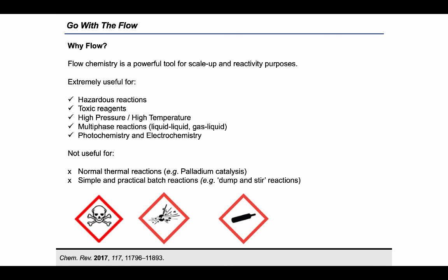It is also clear at this point that there are reactions that do not benefit from flow systems. For example, simple homogeneous chemical transformations that require just high temperature usually do not show any improvement when conducted in flow. There is no reason why a simple dump-and-stir batch protocol should be translated into a flow setting if it cannot be improved by that.